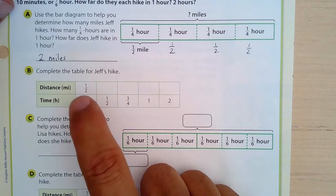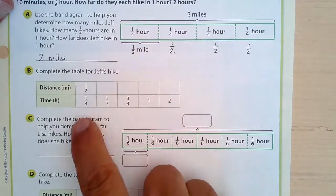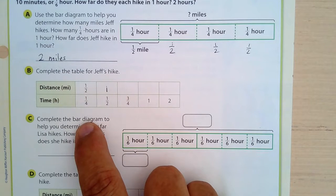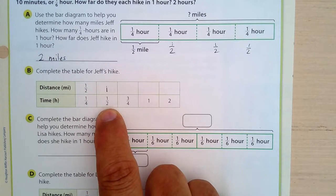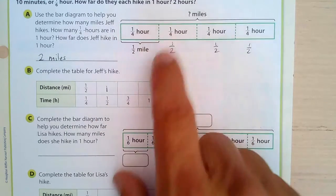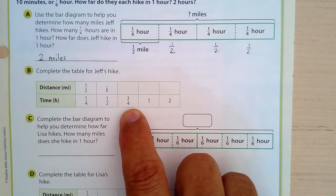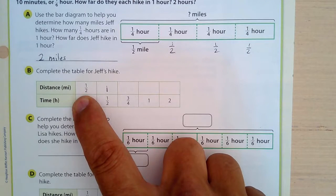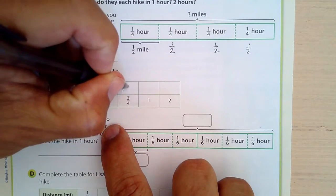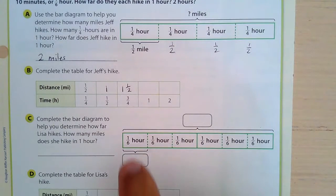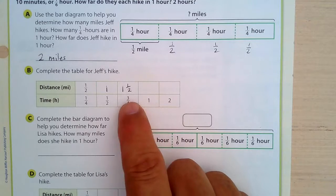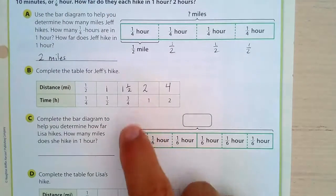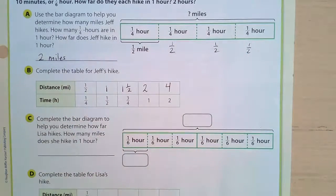Now for the table: in a quarter of an hour Jeff travels a half mile. If we double the time to a half hour, we double the distance to one mile. For three-quarters of an hour, multiply by three — one half times three equals one and a half miles. For a full hour, that's two miles. Doubling that gives four miles for two hours.